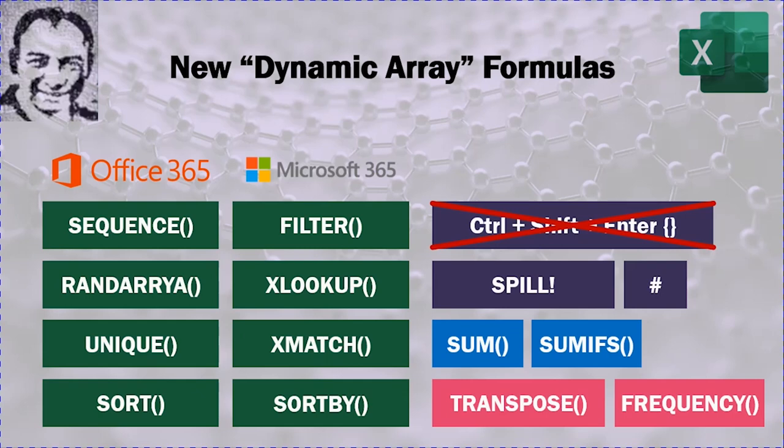Dynamic Array formulas are particularly 8, which is Sequence, Rand Array, Filter, XLOOKUP, XMATCH, UNIQUE, SORT, and SORT BY, but that is not the whole story about Office 365. It has a new concept and a new calculation engine that makes your experience with Excel completely different.